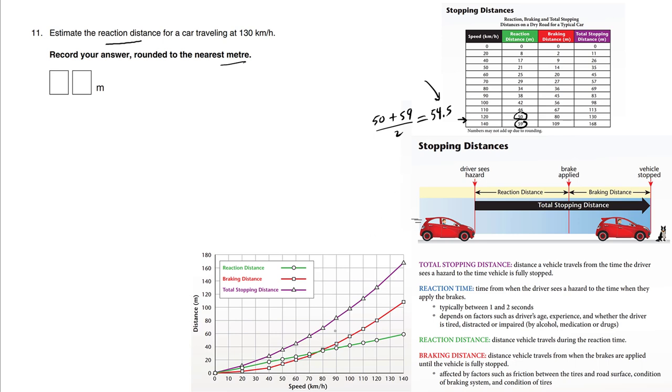And notice how the green graph here is generally linear. So you could guess 54 or 55 if you want to round.